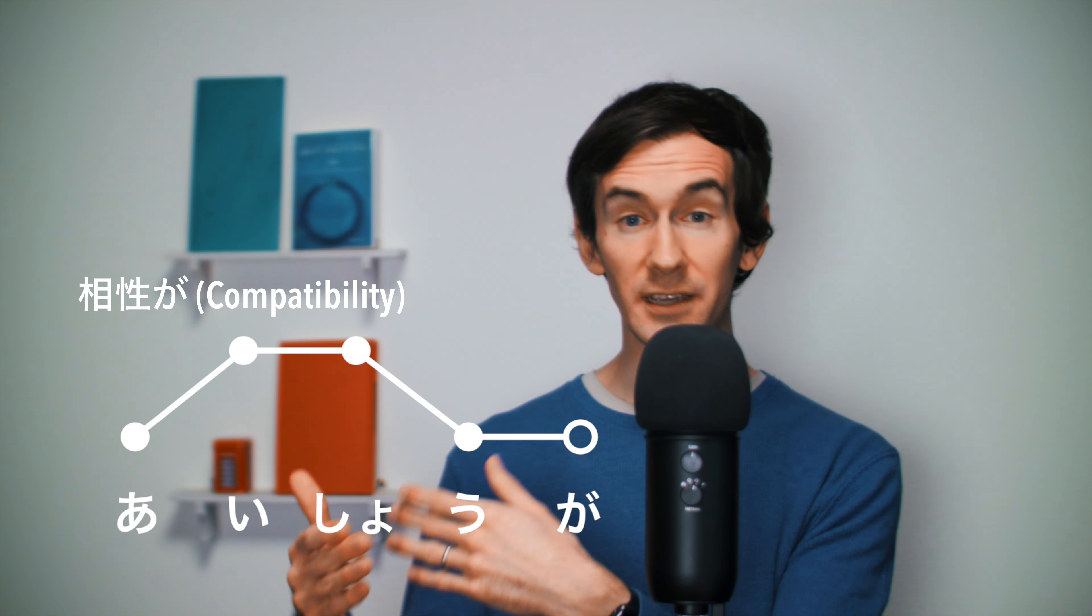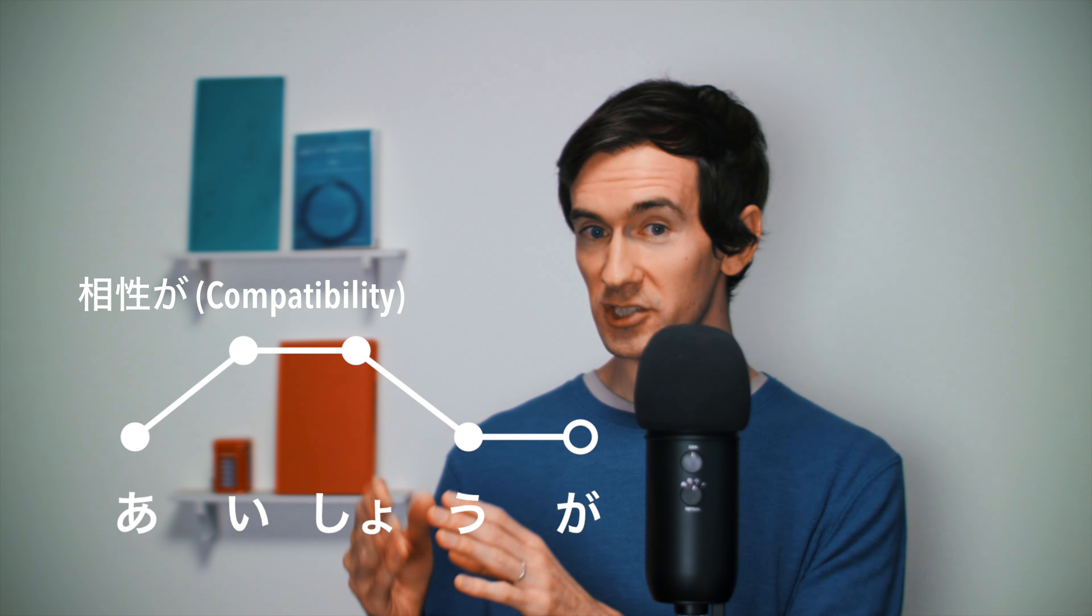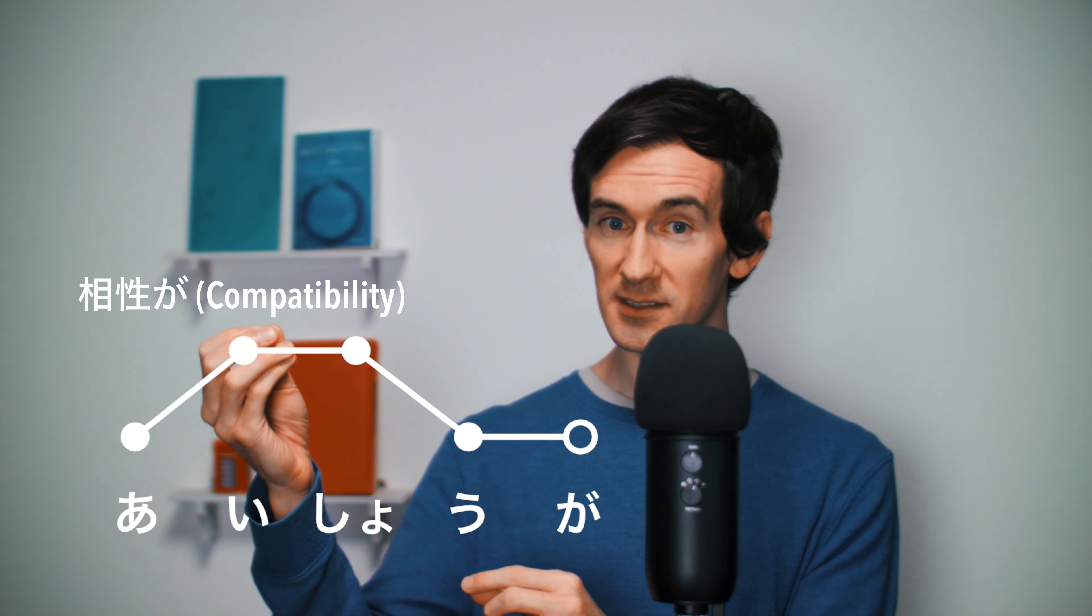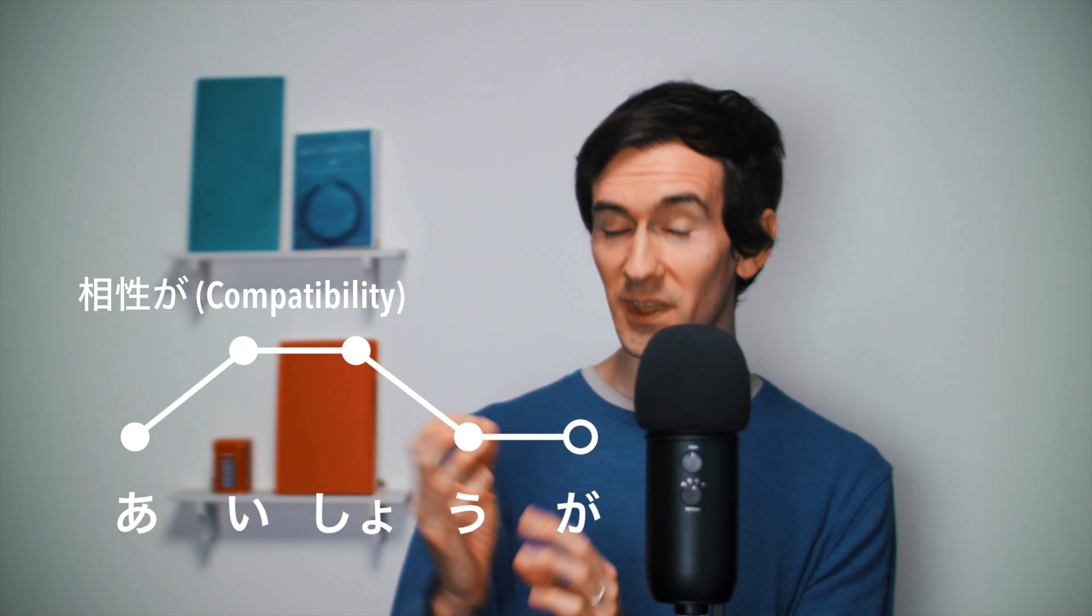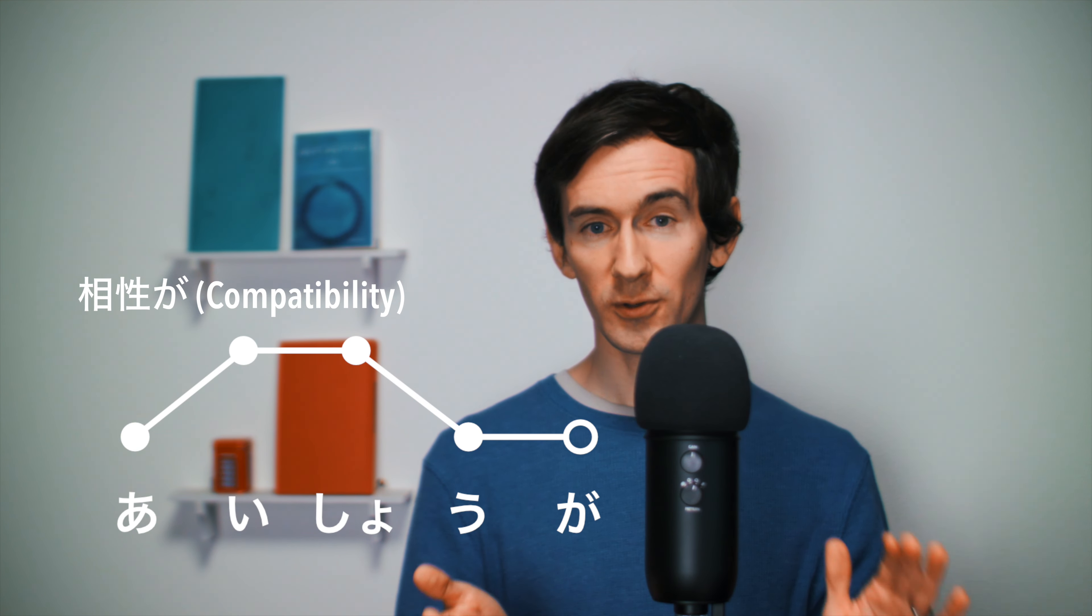So if we pull up a binary graphic for the word 愛秀, or 愛秀, we can see that the pitch starts low, rises, drops on the 秀, and then stays low through the particle.